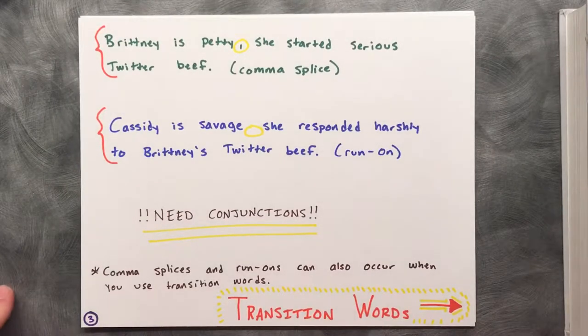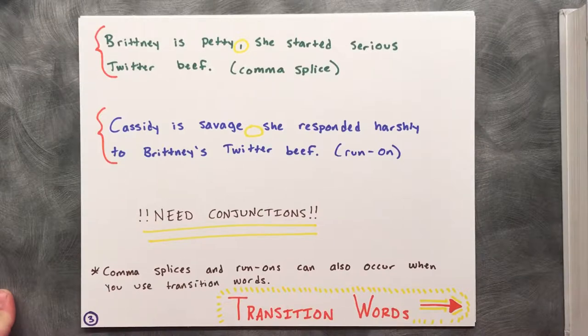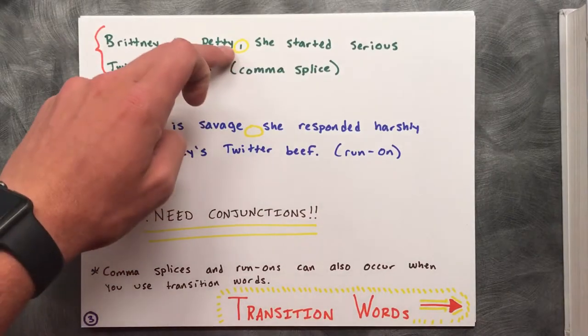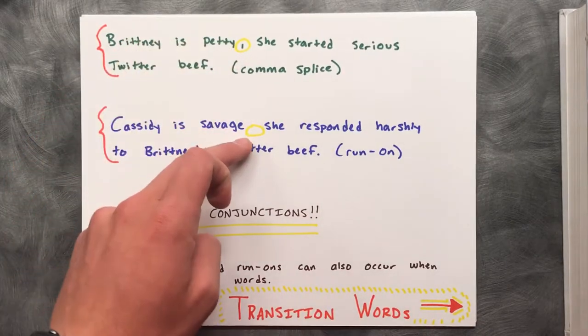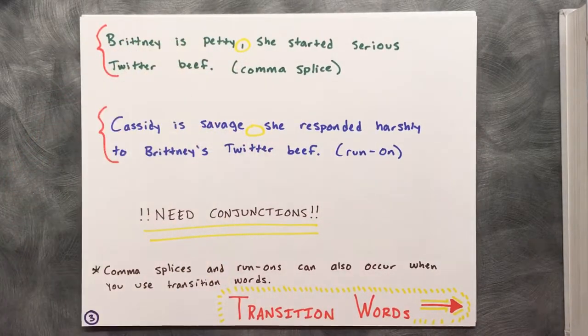As you can see in these two sentences, comma splices and run-ons are similar mistakes. In both cases, punctuation — or the lack thereof — does not indicate a complete independent sentence.